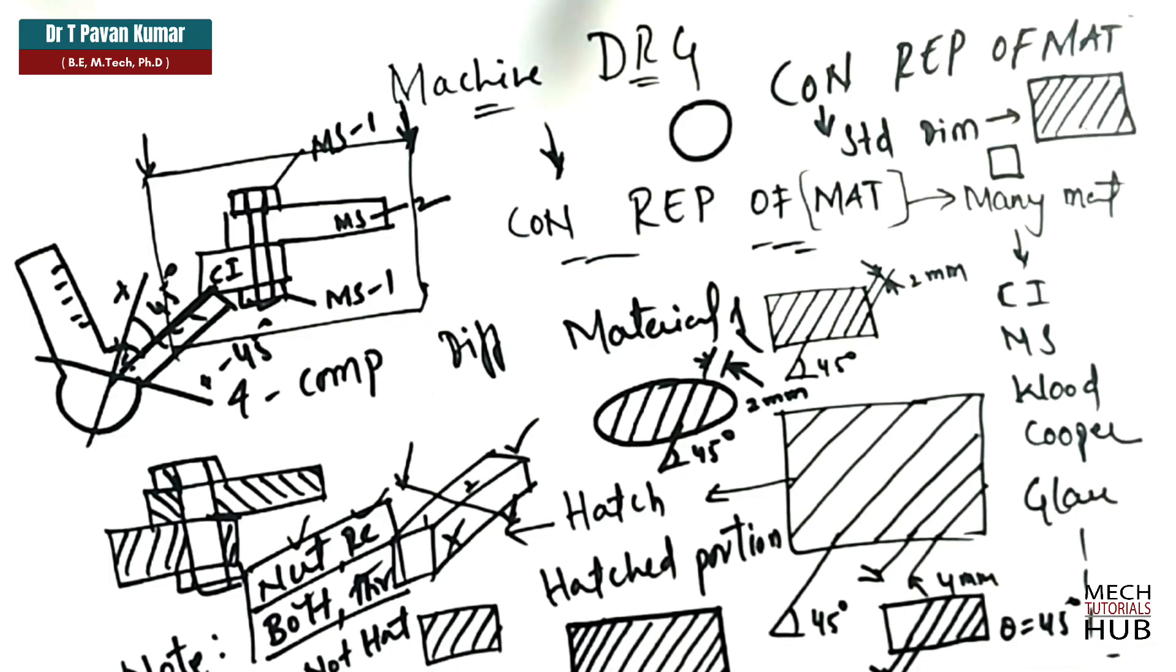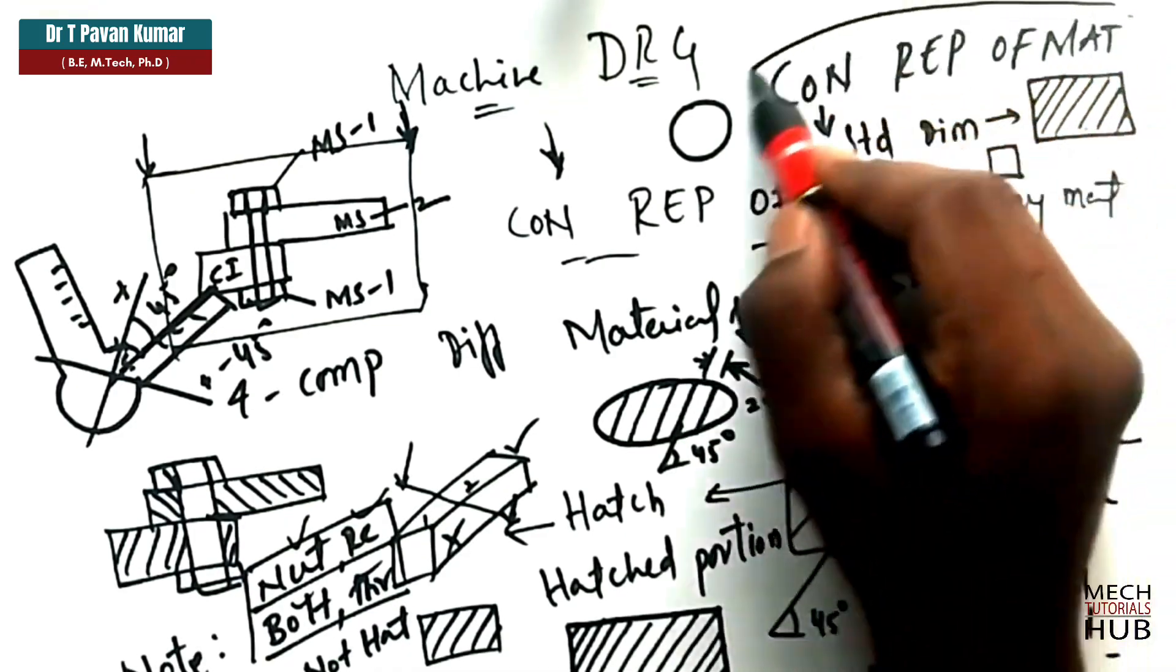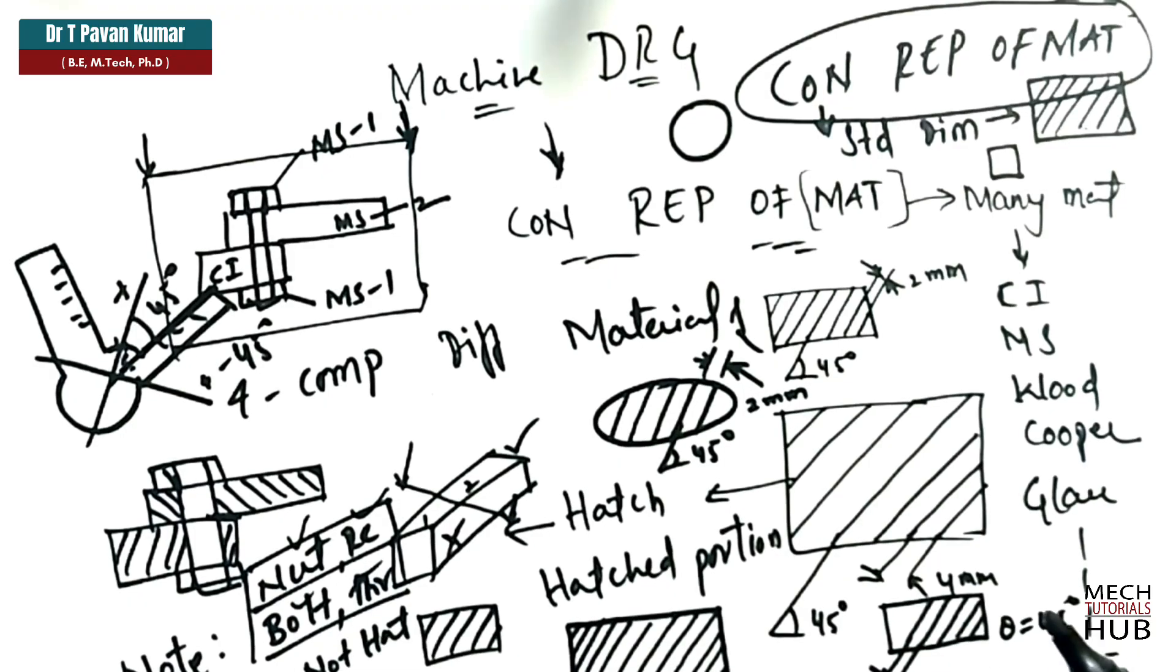Theta is equal to 45 degrees. These angles will change. And the representations will also change. And the patterns will also change. That we'll see in the conventional representation of materials. Which is our next lecture. This is the introduction about machine drawing.